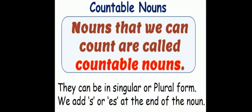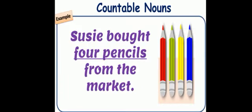Countable nouns. Nouns that we can count are called countable nouns. They can be in singular or plural form. We add S or ES at the end of the noun. Let's see some examples of countable nouns.